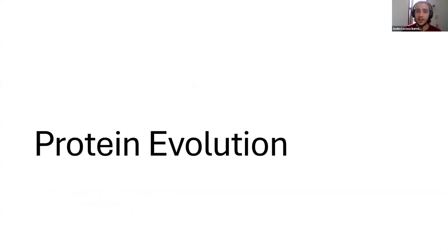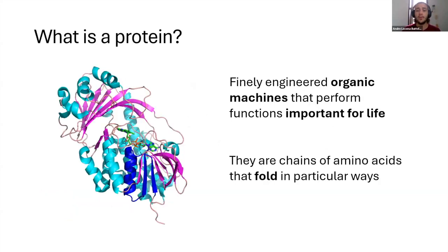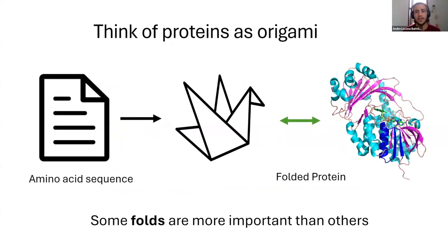So first, a little bit more about protein evolution. Some background for people that don't know, because I know we have people from all fields of science today. So what is a protein? You can think of a protein as an engineered organic machine that performs important functions for life. In reality, they are chains of amino acids that fold in very particular ways. For the purpose of this talk, you can think of proteins as origami. You have a paper that has written in itself the instructions of how to fold itself.